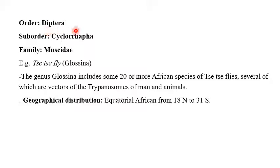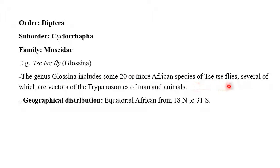In this lecture we are going to talk about the second part of medical entomology. We will discuss Order Diptera, Suborder Cyclorhapha, Family Glossinidae — for example, the tsetse fly, genus Glossina. The genus Glossina includes some 20 or more African species of tsetse flies, several of which are vectors of trypanosomes of men and animals. Geographical distribution: equatorial Africa, from 18° North to 31° South.